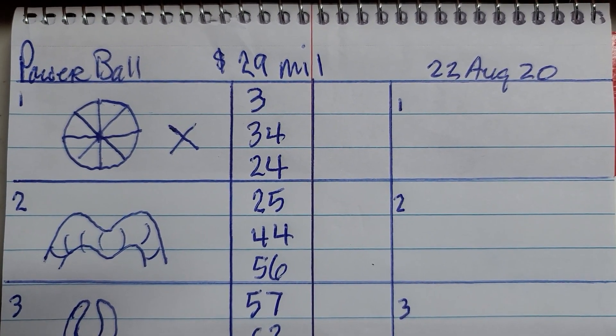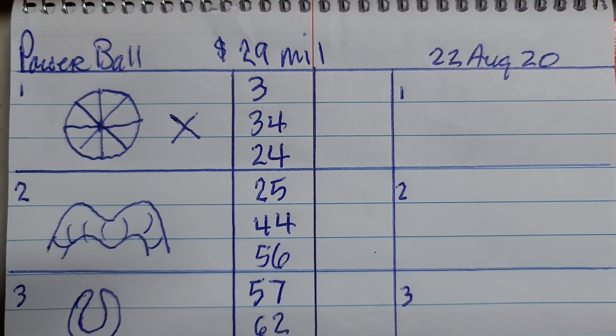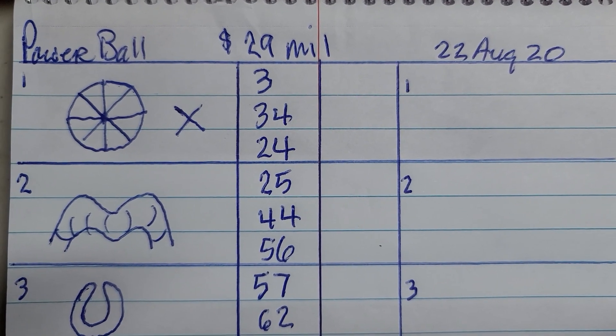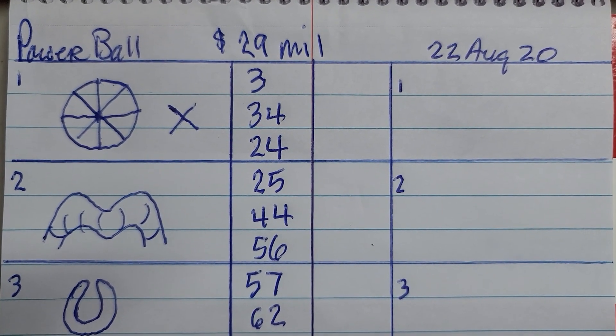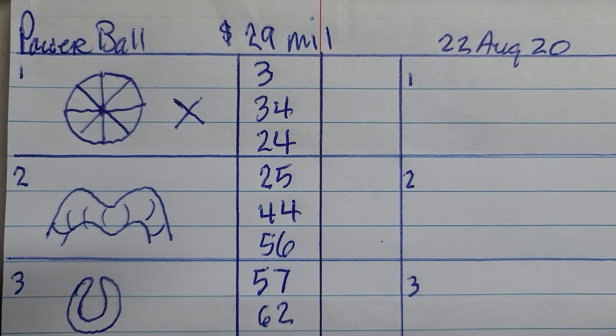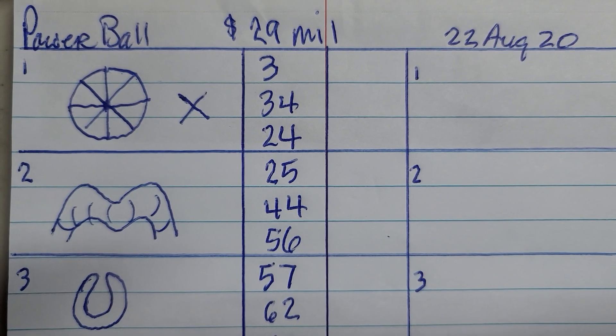Aloha everybody, this is Dave Wallace from Waihewa, Hawaii. This is the number sets for the Powerball that will be played tomorrow, August 22nd, 2020. The jackpot for the Powerball is 29 million, and here are the sketches and the numbers that go with it.